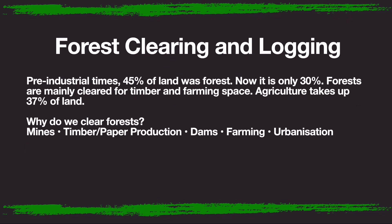Forest clearing and logging. In pre-industrial times, 45% of land was forest; now it's only 30%. Forests are mainly cleared for timber and farming space. Agriculture takes up 37% of land. The main reasons we clear forests are mines, timber and paper production, dams, farming, and urbanisation.